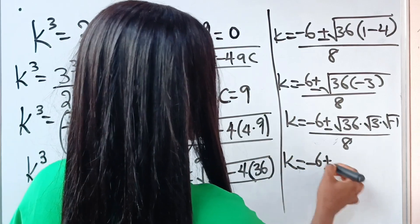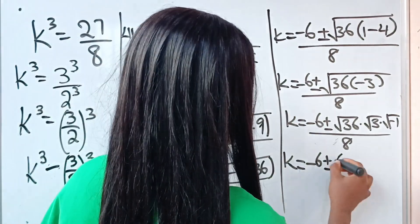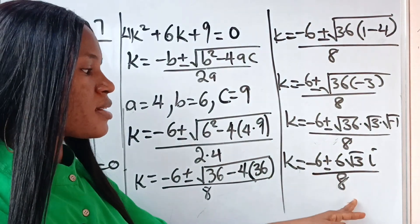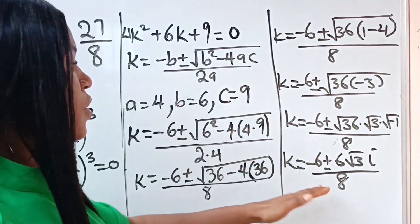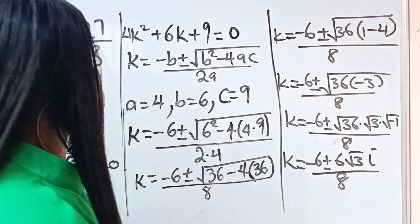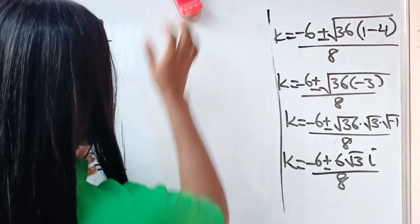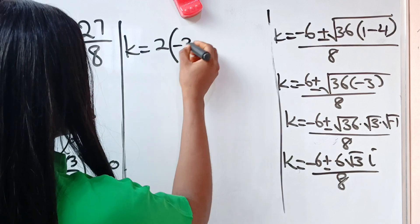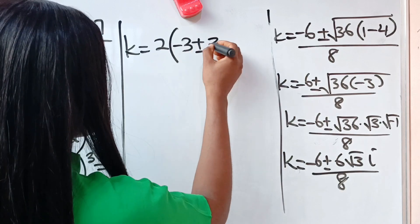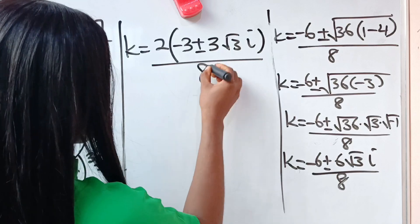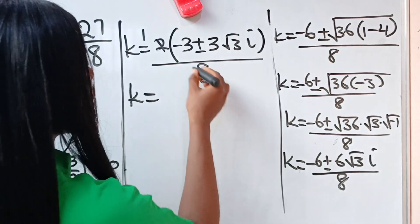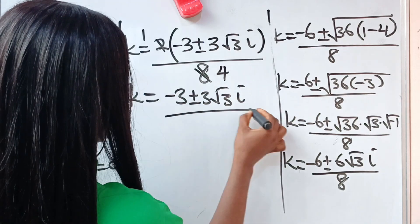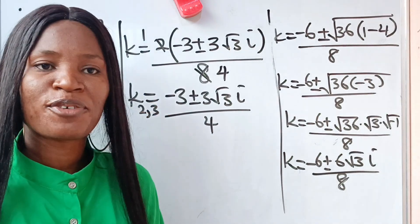So k equals minus 6 plus or minus — the square root of 36 is 6, so we have 6 root 3, and the square root of negative 1 is i — giving 6√3·i, all divided by 8. Since 6 and 8 share a common factor of 2, we factor out 2 from the numerator: minus 6 over 2 is minus 3, and 6 over 2 is 3. So k equals minus 3 plus or minus 3√3·i, all divided by 4. These are the second and third values of k.